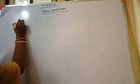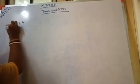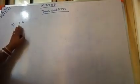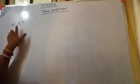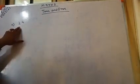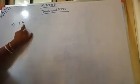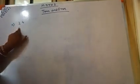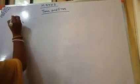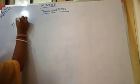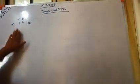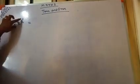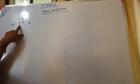So if you are writing a 2-digit number, suppose I have written 24. It is a 2-digit number. 2 is in the tens place and 4 is in the ones place. So we will write here T and O above the number. T means tens and O means ones.